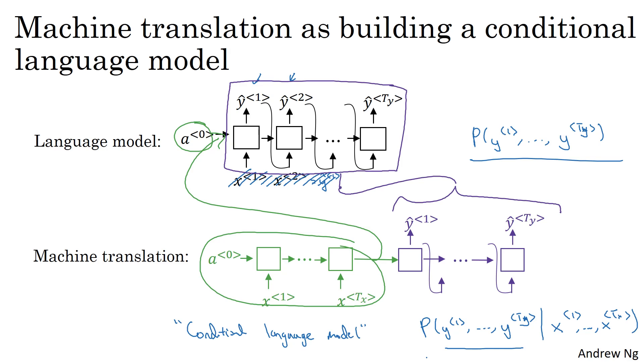like what's the chance that the translation is, Jane is visiting Africa in September, but conditioned on the input French sentence, like Jane visite l'Afrique en septembre. So this is really the probability of an English sentence conditioned on an input French sentence, which is why it is a conditional language model.